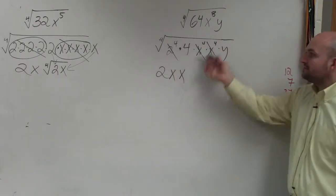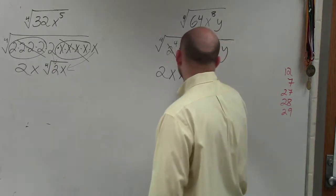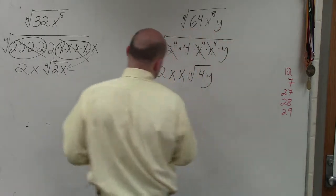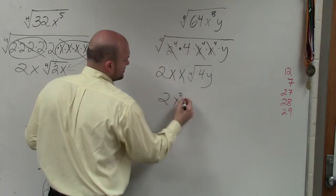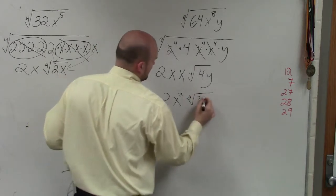So what is still left over under my radical? 4y. Then I just simplify the x squared. So 2x squared, 4y.